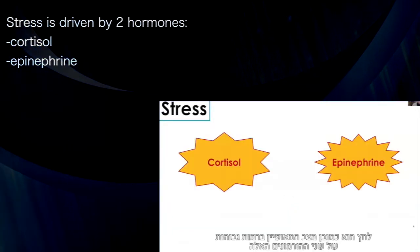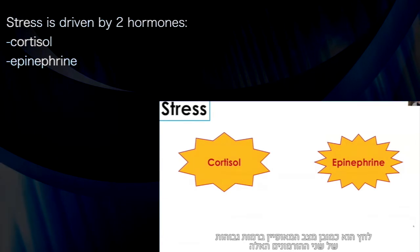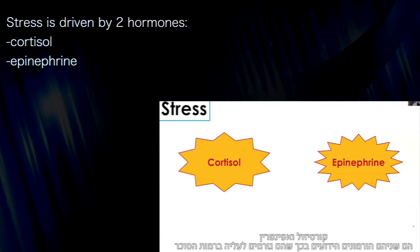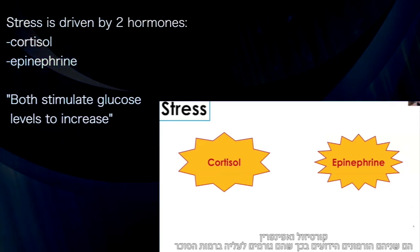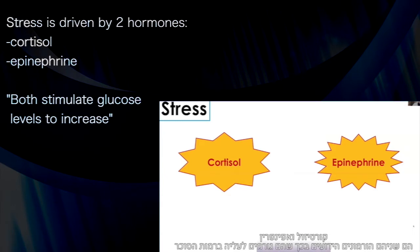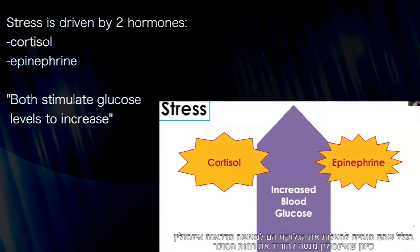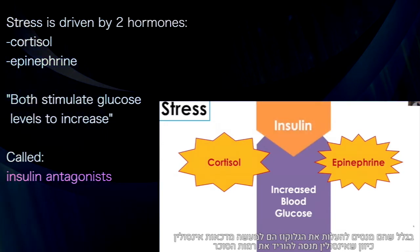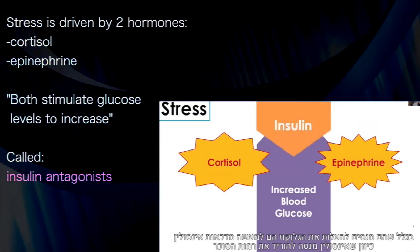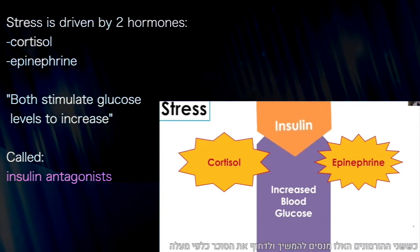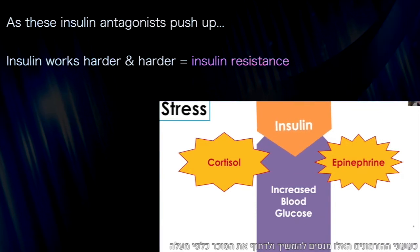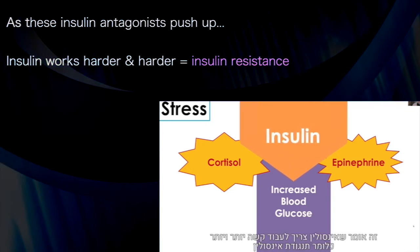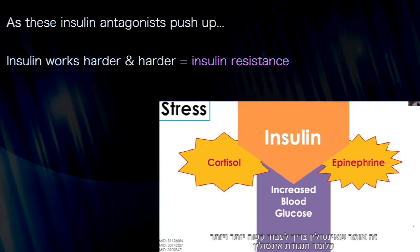Stress is, of course, a state that is typified by these two prototypical stress hormones: cortisol and epinephrine. These are both known hormones to stimulate or to increase blood glucose levels. Because they are trying to push glucose up, they are accurately referred to as insulin antagonists, because insulin is trying to push it down. As these two stress hormones continue to push up and provide an upward pressure on the glucose levels, it just means insulin has to work harder and harder — insulin resistance, in other words.